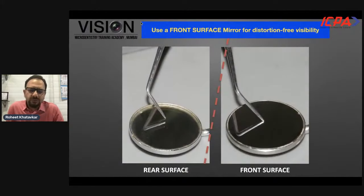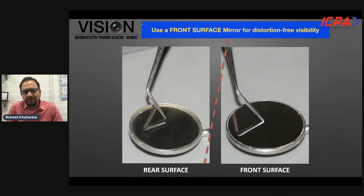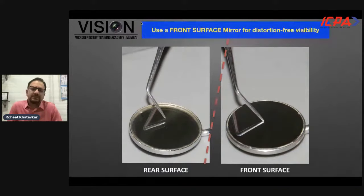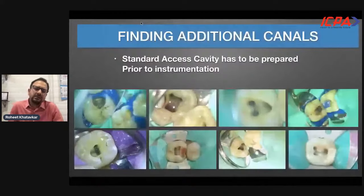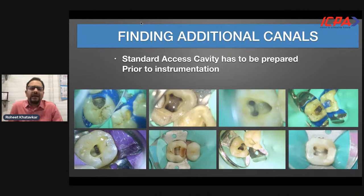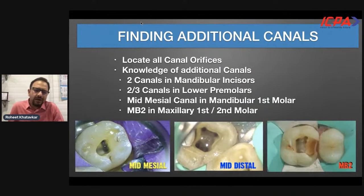For beginners, a very small tip is to use a front-surface mirror instead of a conventional rear-surface mirror. Multiple brands are available today dealing with front-surface mirrors. Images from mirrors such as Zerg, which I personally use, have one of the highest reflectivity. Conventional front-surface mirrors will also provide distortion-free visibility. When concerned about finding additional canals, the standard access cavity must first be made, locate the basic canals, then hunt for additional canals — but only with a DG-16 explorer and not with burs.